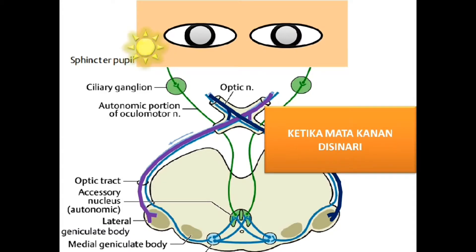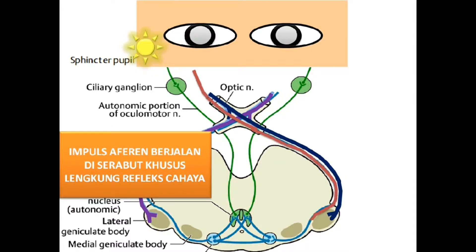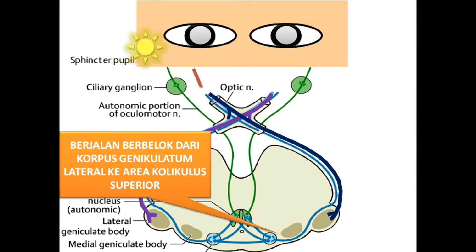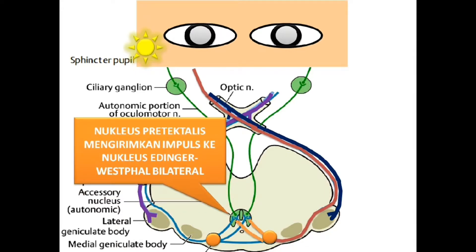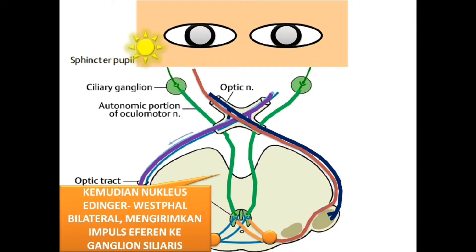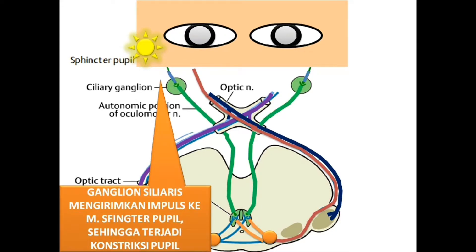Ketika mata kanan disinari, impuls aferen berjalan di serabut khusus lengkung refleks cahaya, berjalan berbelok dari korpus geniculatum lateral ke area kolikulus superior dan kontak dengan nukleus pretektalis. Nukleus pretektalis mengirimkan impuls ke nukleus Edinger-Westphal bilateral. Kemudian nukleus Edinger-Westphal bilateral mengirimkan impuls eferen ke ganglion ciliaris, yang mengirimkan impuls ke muskulus sphincter pupil, sehingga terjadi konstriksi pupil.